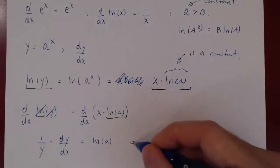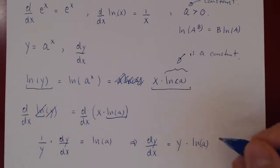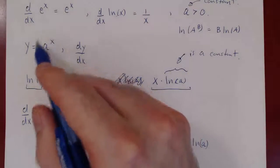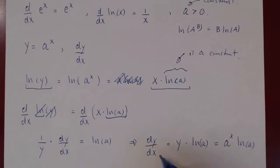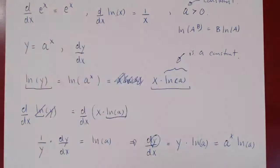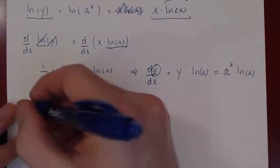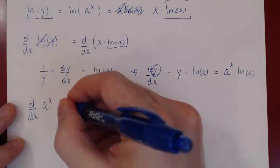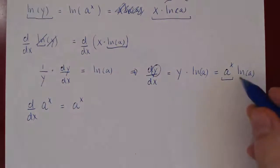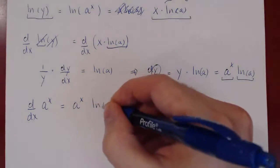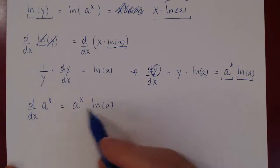We can now solve for dy over dx. Multiply both sides by y, so dy over dx equals y times ln of a. Since y was a to the x, this equals a to the x times ln of the base. The derivative of a to the x for any positive base a is the function itself times ln of a.